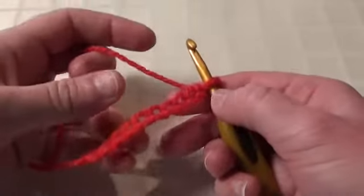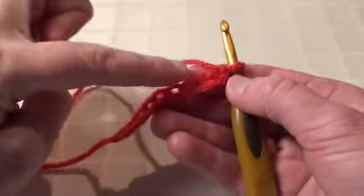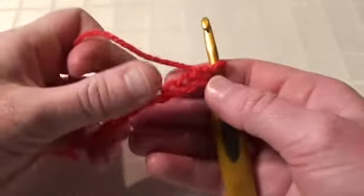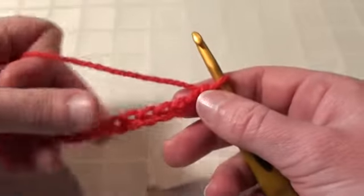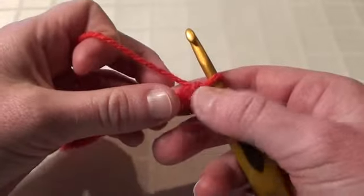The crochet foundation row is the first row of stitches you make along the foundation chain. Any crochet stitch can create the crochet foundation row, and I'll demonstrate the single crochet stitch to create a foundation row for you to see.